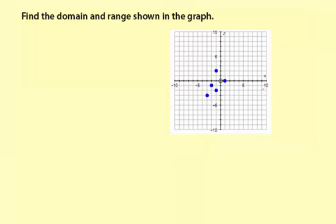Find the domain and range shown in the graph. Okay, looking at this graph, there are five points. And x is the input variable, y is the output variable. So x is going to represent the domain, y is going to represent the range.